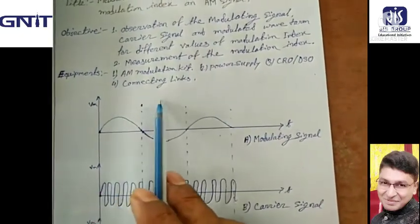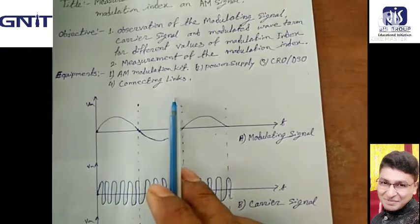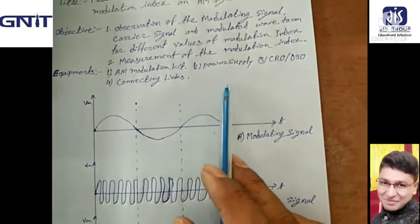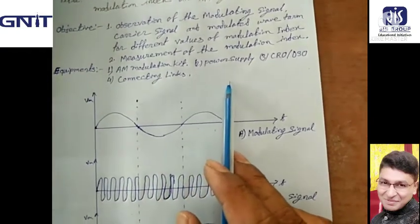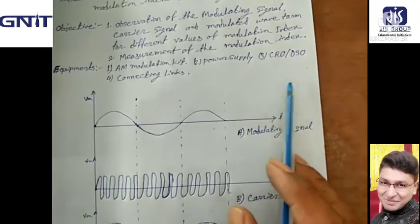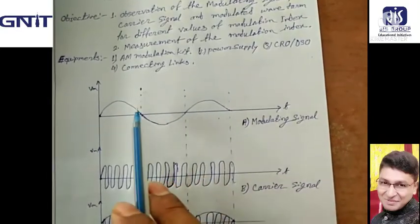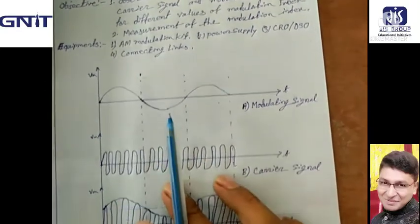Equipment used: AM modulation kit, power supply, CRO or DSO, and connecting links.